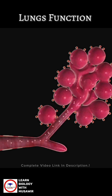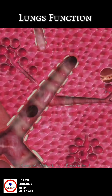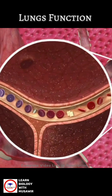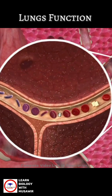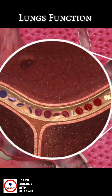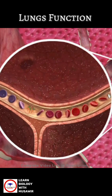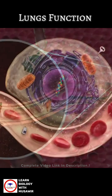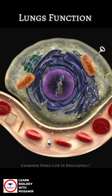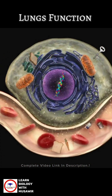It is these air sacs that give the lungs their spongy appearance. The walls of the air sacs are very thin, allowing oxygen to move from the lungs into the red blood cells in the bloodstream. This blood then carries oxygen to the cells all around the body.